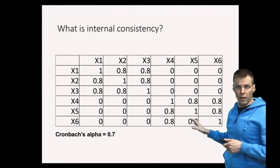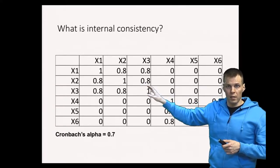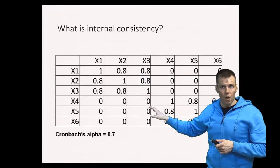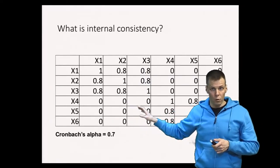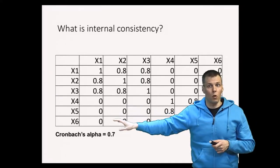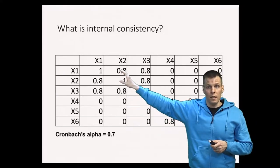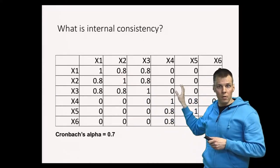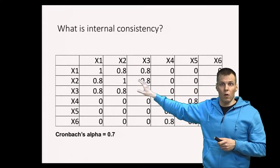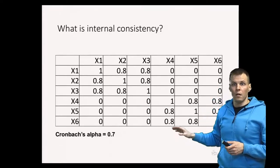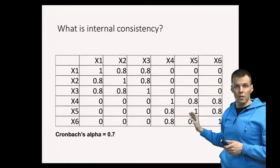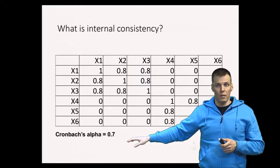X4, X5 and X6 are designed to measure something else and they are highly correlated with one another because they measure the same thing. But these two groups of indicators X1, X2, X3 and X4, X5, X6 are uncorrelated with one another because they are designed to measure two distinct things that are not correlated. So this set of six indicators measures two different dimensions.